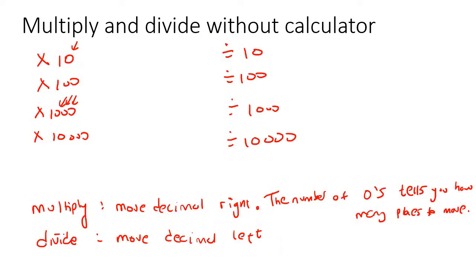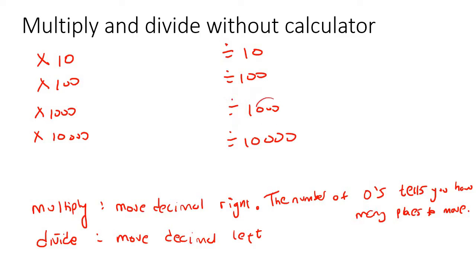So for example, if someone multiplies by 100, they're going to move two decimal places to the right. If you divide by 1000, then you're going to move three places to the left. So let's go practice some examples.